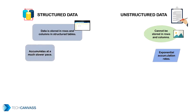Structured data accumulates at a much slower rate in comparison with unstructured data. Every single day, the bulk of data produced is unstructured in nature — like emails, texts, social media data, reviews, and so on. IDC and Seagate predict that global data will grow to 163 zettabytes by 2025, and the majority of that will be unstructured.